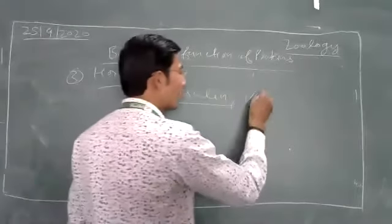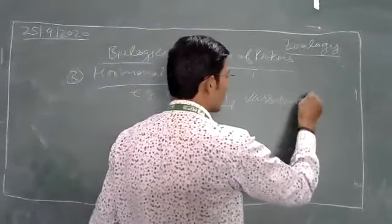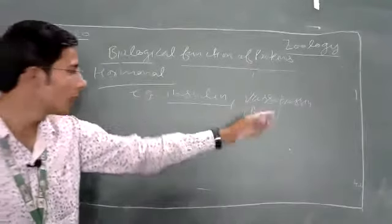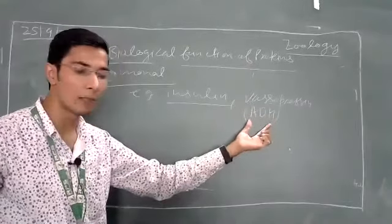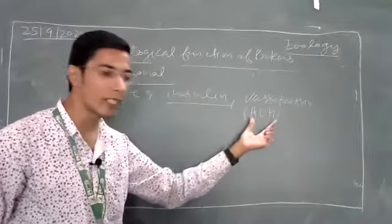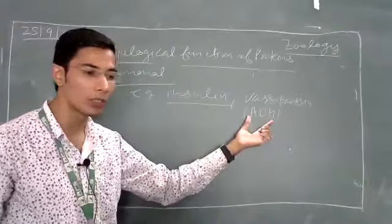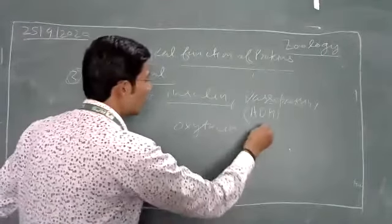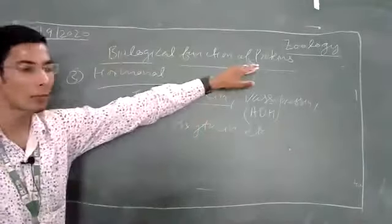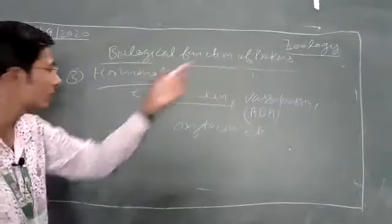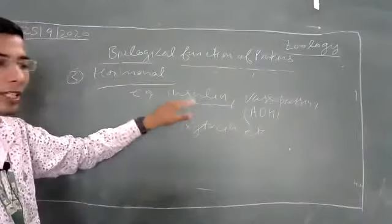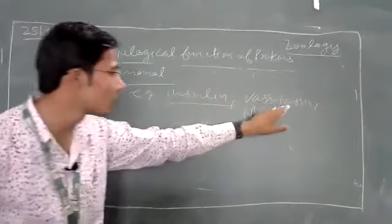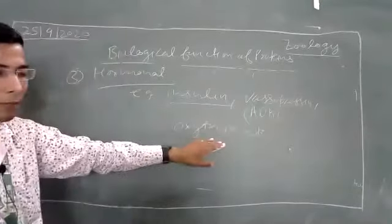Second, we talk about vasopressin hormone, also known as ADH — anti-diuretic hormone. This helps in water retention. The vasopressin hormone has 9 amino acids. These are proteinaceous hormones. You can also use oxytocin as an example. So the three examples of protein hormones are: insulin, vasopressin, and oxytocin.